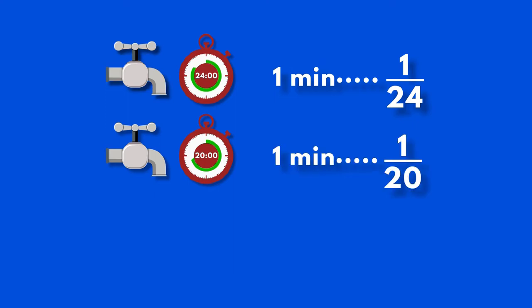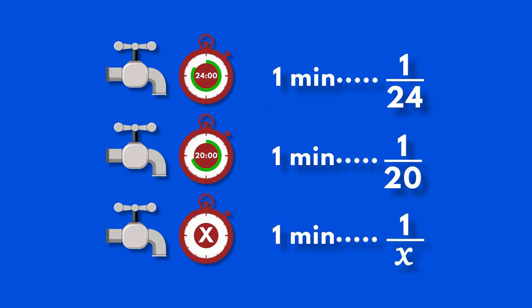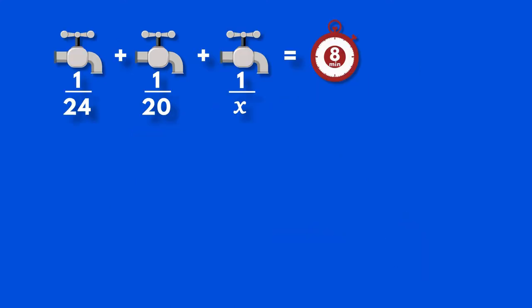If the third tap alone can fill the pool in x minutes, then in one minute it would fill 1 over x of the pool. If all three taps are working simultaneously, then in one minute we would have 1 over 8 of the pool filled. Remember, the three taps working together can fill the pool in 8 minutes.